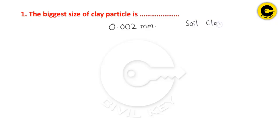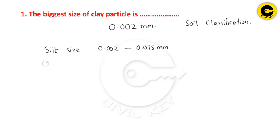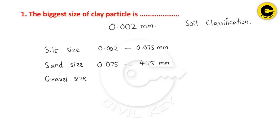Now we have to write the soil classification. We can write the particle size of clay. We write silt, sand, and gravel. The silt size range is 0.002 mm to 0.075 mm. Sand size is 0.075 mm to 4.75 mm. Gravel size is 4.75 mm to 8 mm.